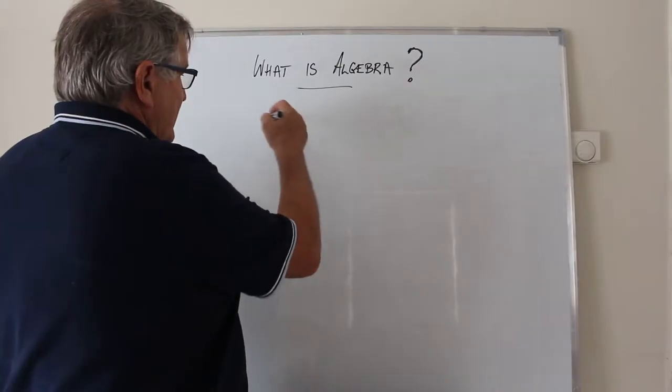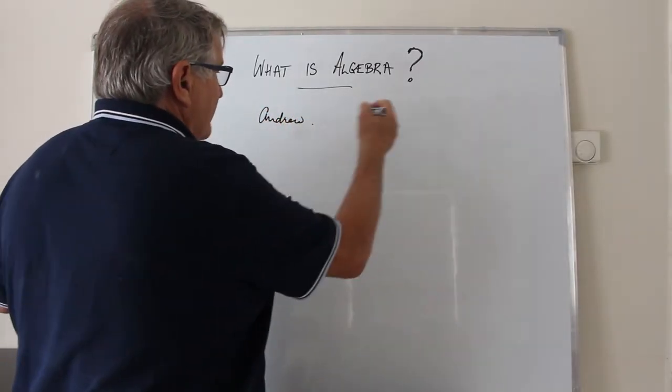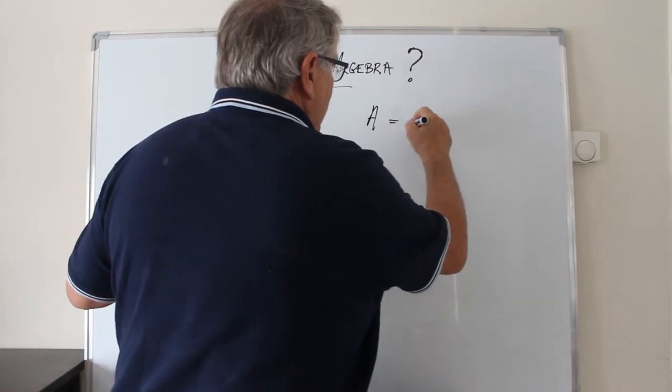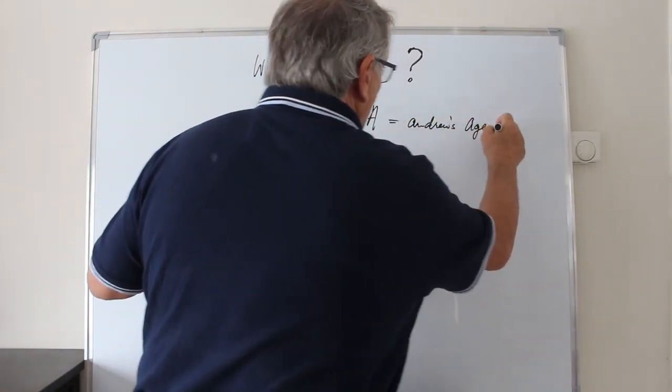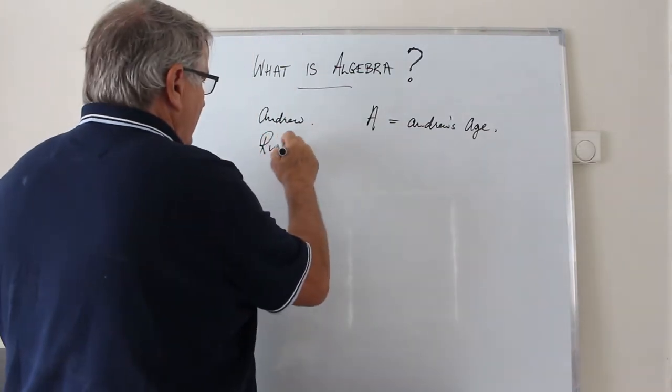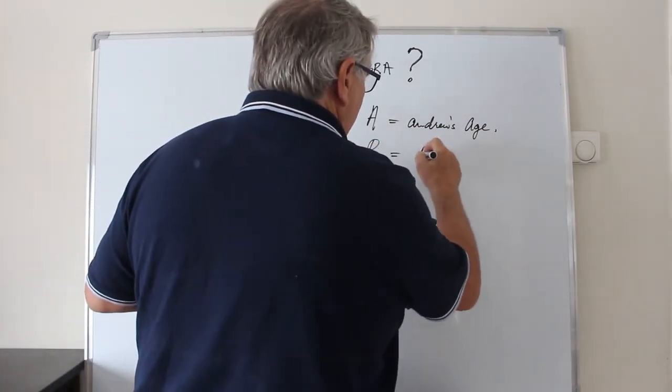For example, my son Andrew, if we let a equal Andrew's age, and my name's Rick, so we'll let r equal Rick's age.